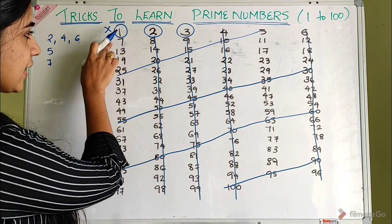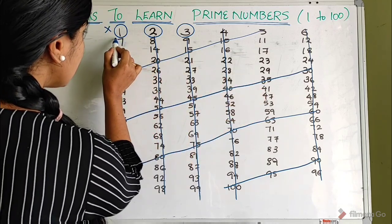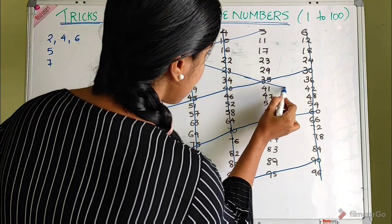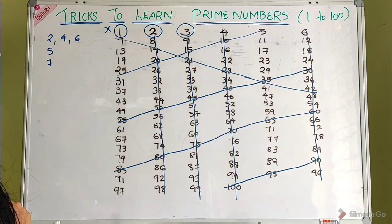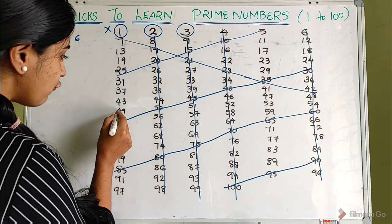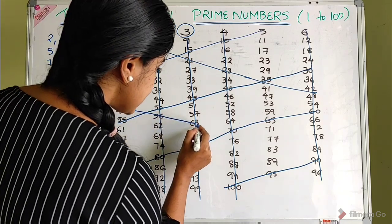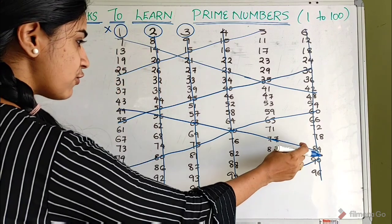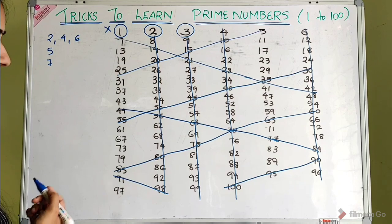7 is diagonal — it's prime. The multiples of 7 are: 7, 14, 21, 28, 35, 42, 49, 56, 63, 70, 77, 84, 91, 98. These are all composite and are crossed out.